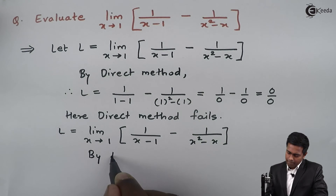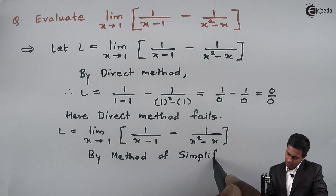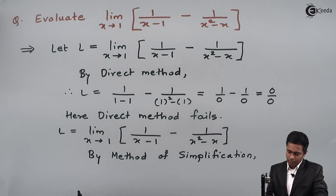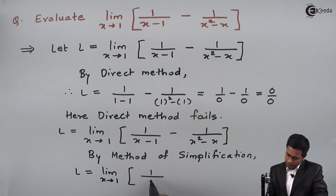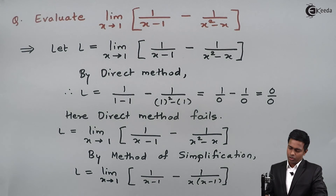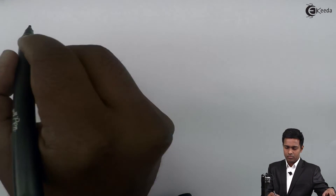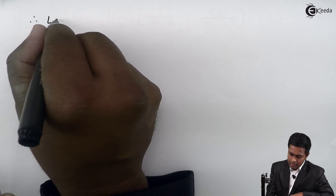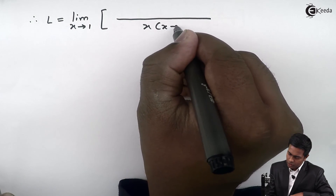By the method of simplification, we write this as the limit as x tends to 1 of 1 upon x minus 1, minus 1 upon x times x minus 1. Taking the LCM: we have x minus 1 in the first denominator and x into x minus 1 in the second, so the LCM becomes x into x minus 1.